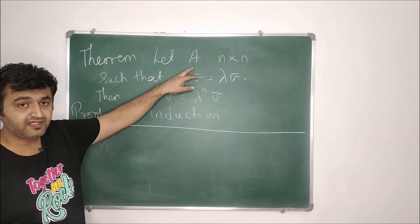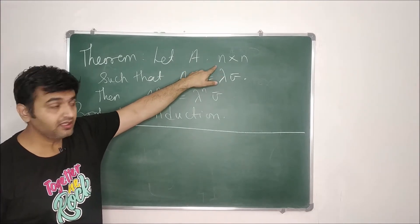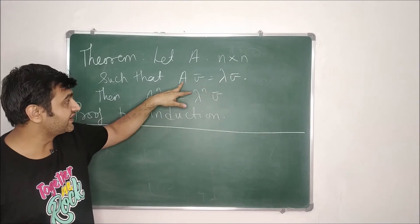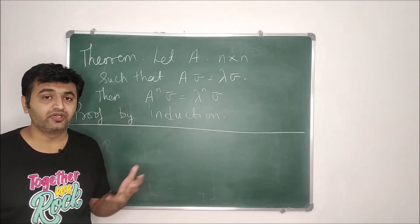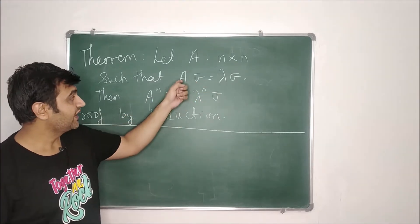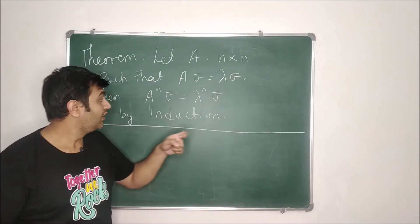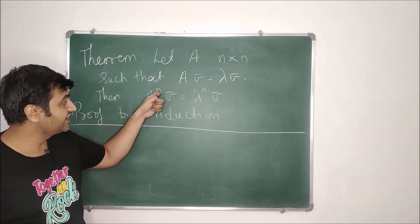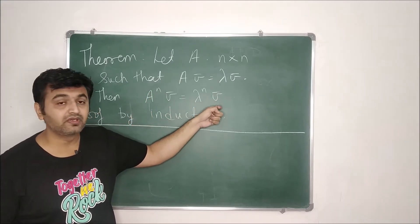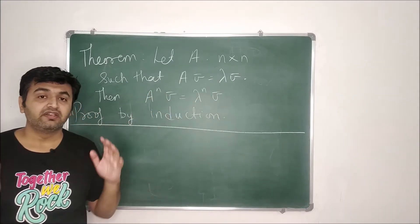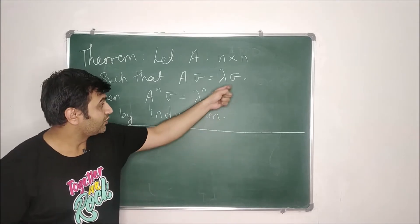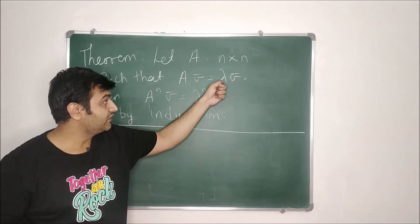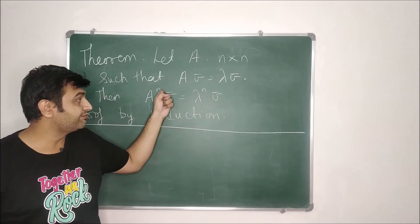Suppose you have a square matrix of order n, and suppose lambda is the eigenvalue for matrix A and V̄ is the corresponding eigenvector — that means A·V̄ = λ·V̄. Then when you take the power of the matrix, we have A^n·V̄ = λ^n·V̄. That means whenever you take a power of a matrix, the eigenvectors remain the same but the eigenvalue gets raised to the same power.